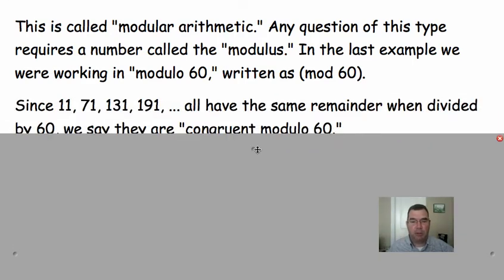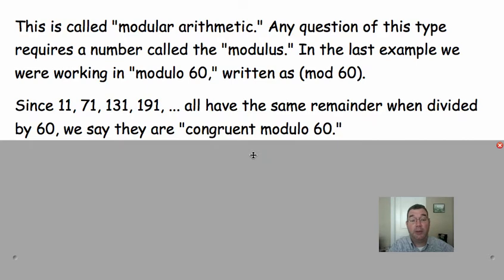Since all of those numbers, 11, 71, 131, 191, if you divide those all by 60, then you would get the exact same remainder. So, if you get the same remainder with more than one number, then those numbers are all said to be congruent with that modulus, or congruent modulo 60.